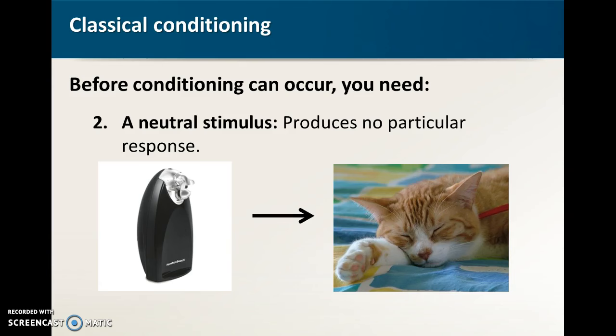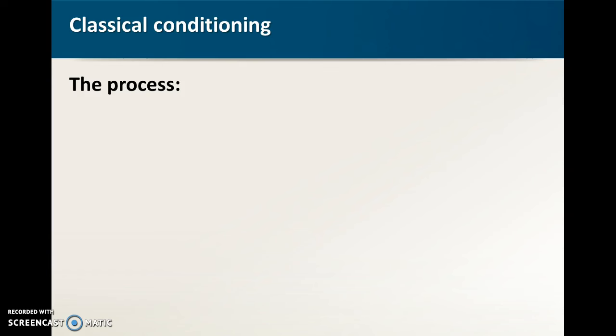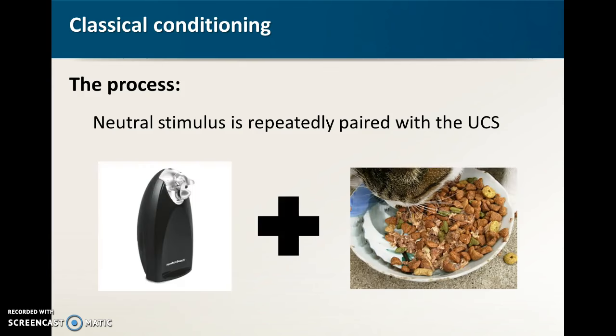But now we get into the actual classical conditioning and what we're gonna do is repeatedly pair the neutral stimulus with that UCS. So in this case remember the neutral stimulus is the can opener and we are gonna pair it with yummy delicious cat food and we're gonna do this over and over and over again. The cat's gonna hear the can opener and then it's gonna get yummy cat food. And we're gonna do this a bunch of times. How many times we need to do it will depend on a whole host of other factors but we'll do it a bunch of times.